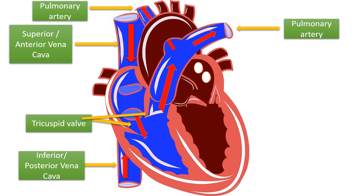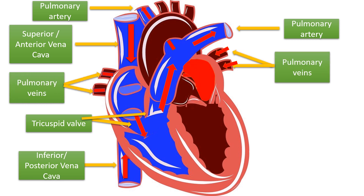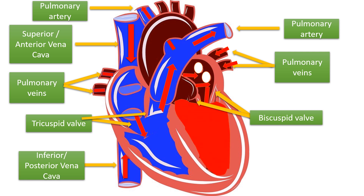In the lungs, the deoxygenated blood is purified into oxygenated blood. The oxygenated blood then comes back to the heart through the pulmonary vein into the left atrium. Between the left atrium and left ventricle there is a valve called the bicuspid valve. As the atria contract, the valve opens and the oxygenated blood travels from the left atrium to the left ventricle.